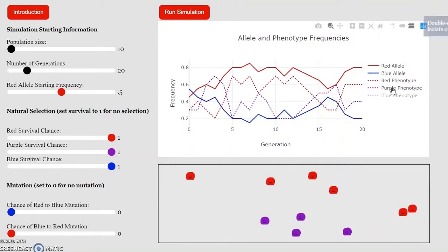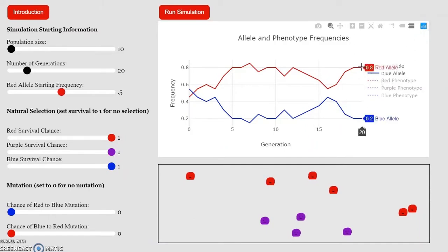Since we only plan on using the allele frequencies for now, we can click on the phenotype frequencies to remove those lines, which just makes it a little easier to look at. Then hover over one of the lines to get the numerical data. The final frequency for the red allele is 0.8, and the blue allele is 0.2. These are the numbers we'll be using to calculate the observed values for the chi-squared test. If evolution is not occurring, which is the null hypothesis, then the final frequencies will not be significantly different.